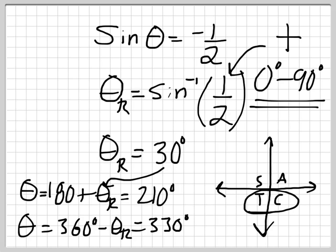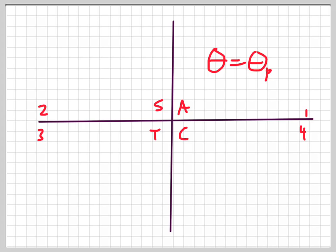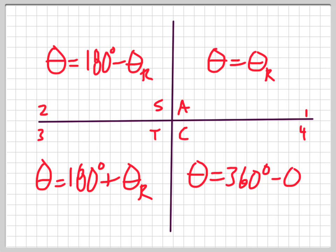Knowing the reference angle in conjunction with the CAST rule is really, really important. Let me redraw the CAST rule to give you a solid foundation. In the first quadrant, theta equals theta r. In the second quadrant, theta equals 180 minus theta r. In the third quadrant, theta equals 180 plus theta r. In the fourth quadrant, theta equals 360 minus theta r. Knowing this along with how to find the reference angle is essential.